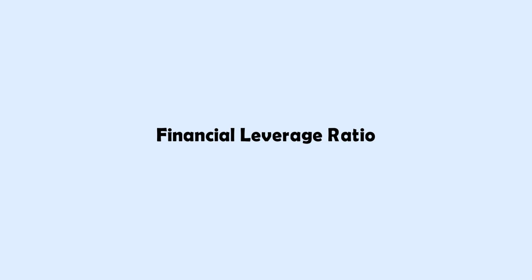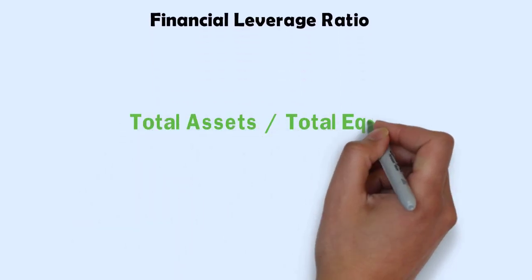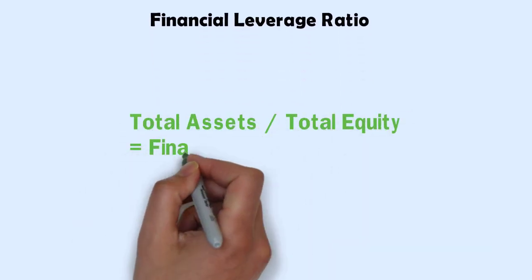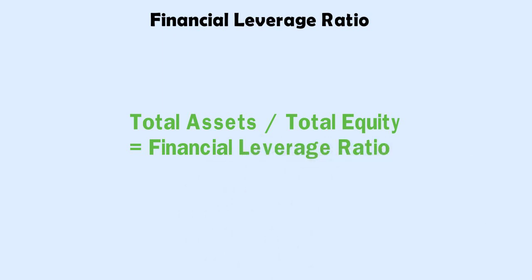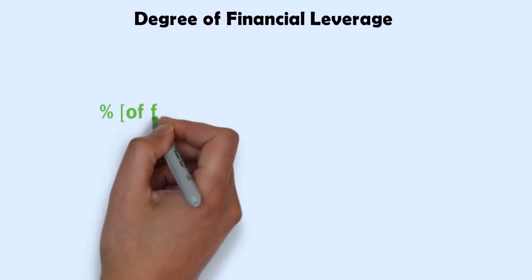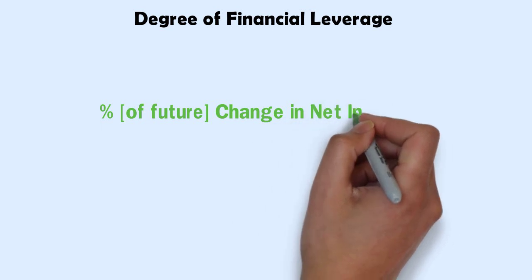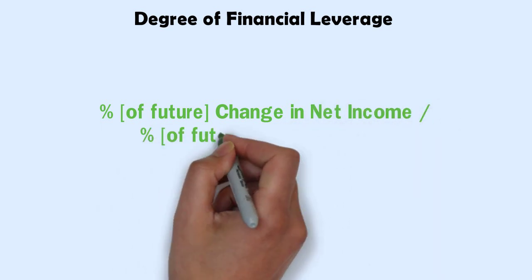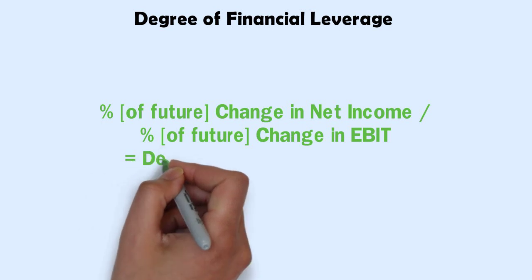Financial Leverage Ratio: Total assets divided by total equity equals the financial leverage ratio. Degree of Financial Leverage: Percentage of the future change in net income divided by the percentage of the future change in earnings before interest and taxes.